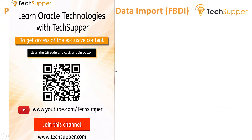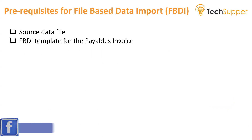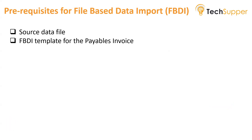To start, you need the source file where the data actually resides. The source data file can be the file coming from your partners or your application where the data is. Then you have to generate the FBDI template — you need the FBDI template for Payables invoices. This template will help you prepare your data in the format required for the ERP.